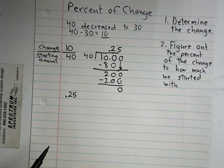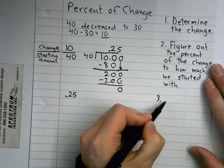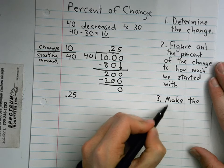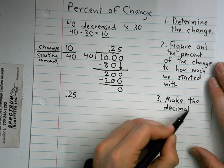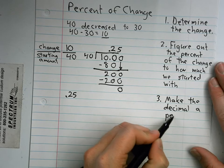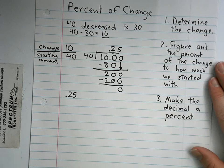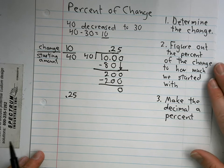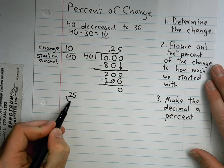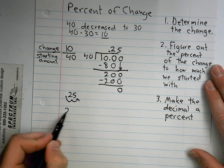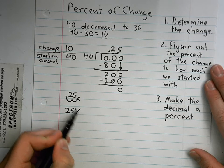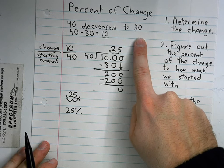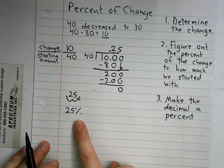How do I make that a percent? Step three, make the decimal a percent. How do I do that? Austin, move the decimal over twice. So I now have 25%. When 40 decreased to 30, the amount it changed was 25%.